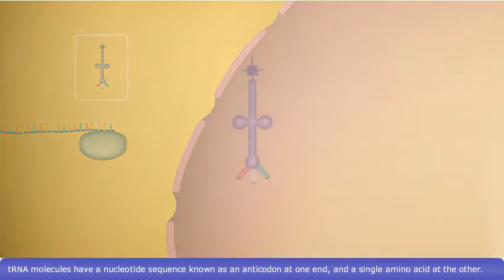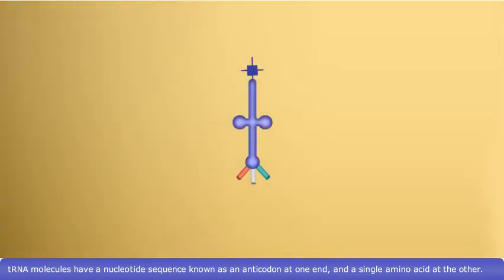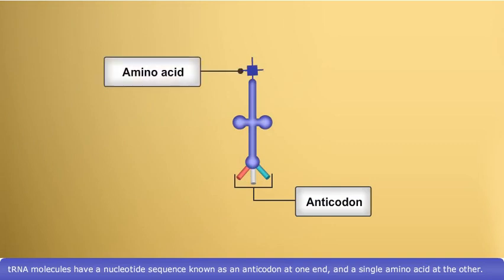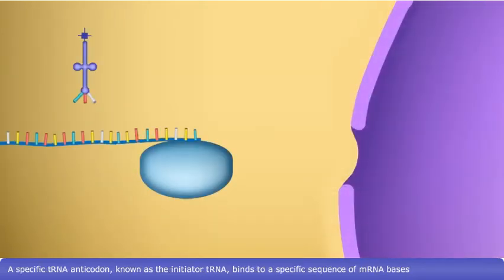tRNA molecules have a nucleotide sequence, known as an anticodon, at one end and a single amino acid at the other. A specific tRNA anticodon, known as the initiator tRNA,